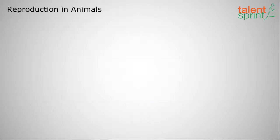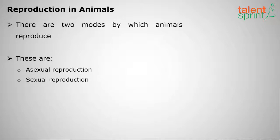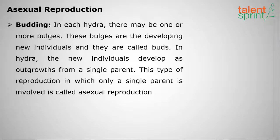Moving on to reproduction in animals: there are two modes by which animals reproduce — the same as in plants — asexual reproduction and sexual reproduction. First we shall deal with asexual reproduction, which includes the same general types we found in plants.